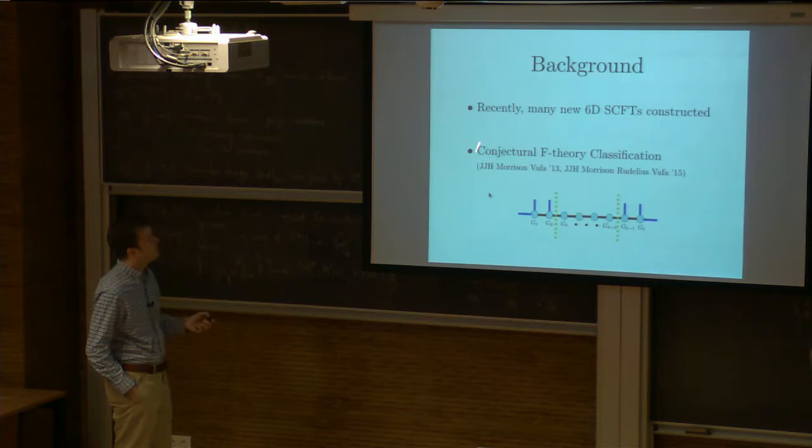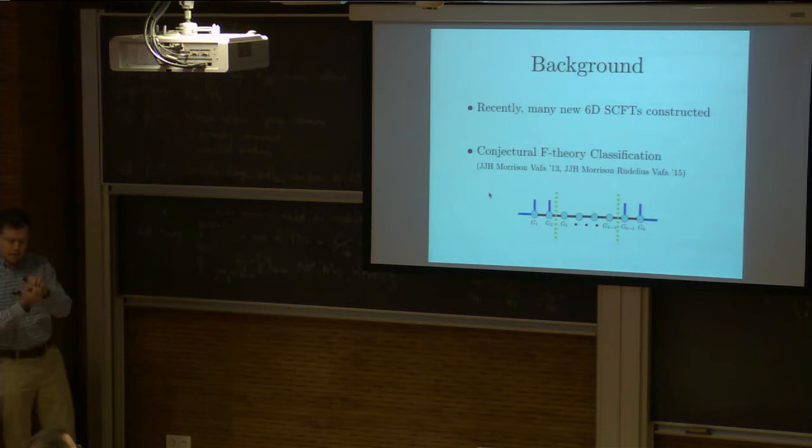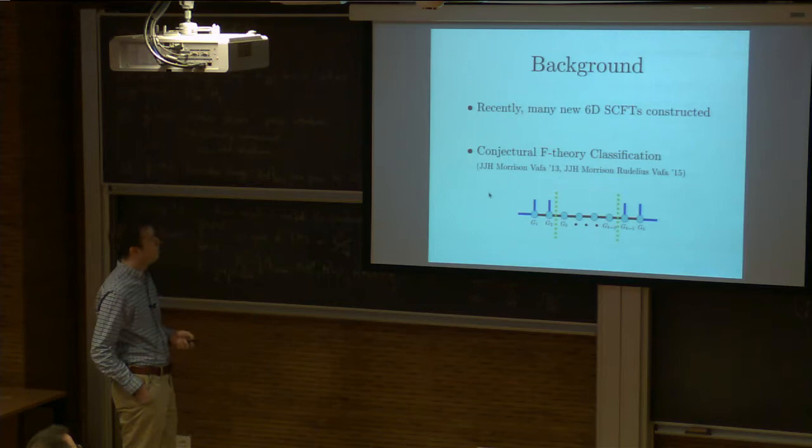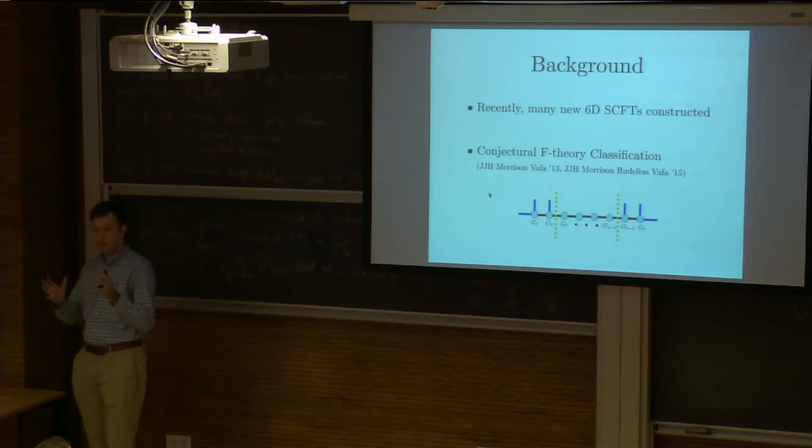Background: recently we found many new ways to make 6D CFTs. It always involves taking P1s in the base of the F-theory of a six-dimensional Calabi-Yau threefold, collapsing those P1s to a point in the base. There's conjecturally a classification, at least if you focus on the geometric phases, and the outliers are sufficiently mild that if you squint, you can view it as all of them.